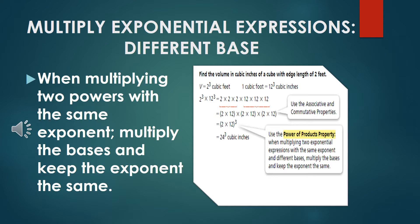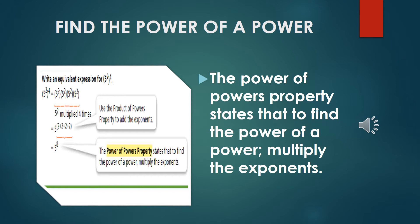When we need to multiply exponential expressions with different bases but the same exponent, we only need to multiply the bases and keep the exponent the same. In this example, we have 2 to the power of 3 times 12 to the power of 3. We multiply 2 times 12, which is 24, and just copy the exponent 3. So the answer is 24 to the power of 3.